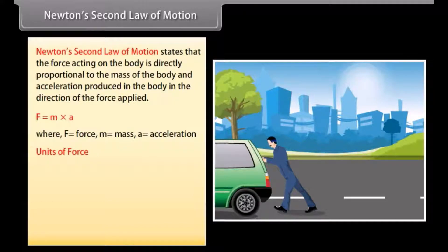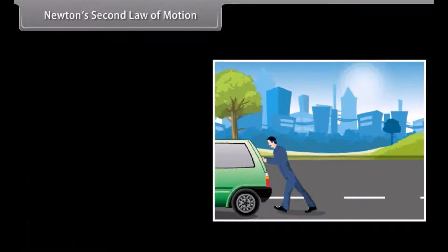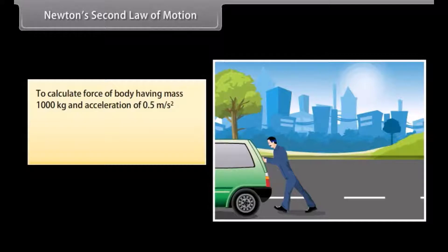The SI unit of force is Newton. Newton is defined as the force acting on the body of mass 1 kg producing an acceleration of 1 meter per second square. Unit is equal to kilogram meter per second square or Newton. To calculate force of body having mass 1000 kg and acceleration of 0.5 meter per second square, then F is equal to 1000 into 0.5 which is equal to 500 Newton.